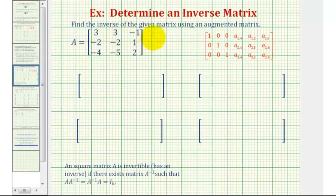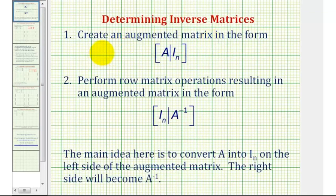Welcome to an example on how to find the inverse of a three-by-three matrix using an augmented matrix. The first step is to create an augmented matrix where the left side is matrix A, or the given matrix, and the right side is an identity matrix. Then we perform row operations resulting in an augmented matrix where the left side becomes the identity matrix and the right side will be the inverse of matrix A.